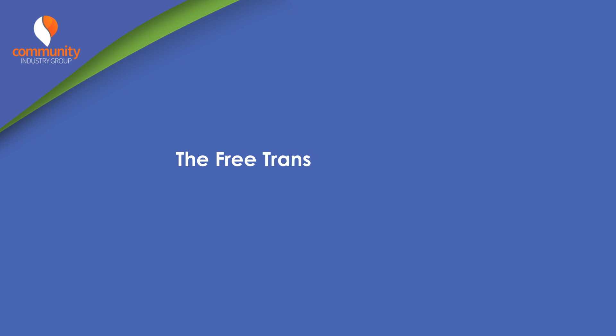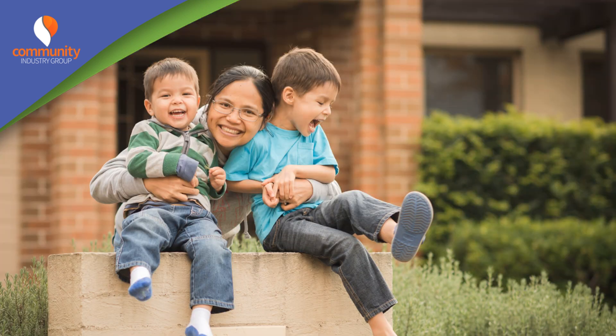The free translating service is provided for people settling permanently in Australia to support participation in employment, education and community engagement. Permanent residents and select temporary or provisional visa holders are able to have up to 10 eligible documents translated into English within the first two years of their eligible visa grant date. Applications are made on the Free Translating Service website, which is available in English, Arabic, Farsi and simplified Chinese.